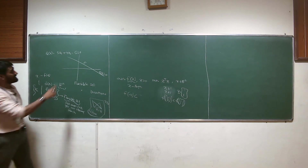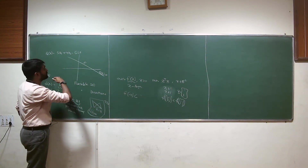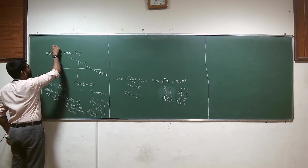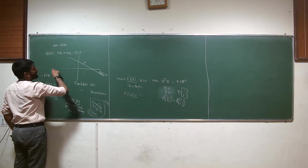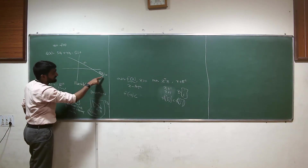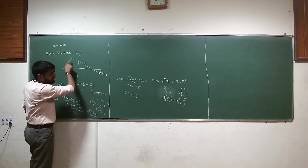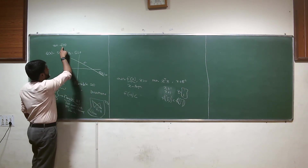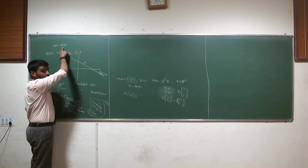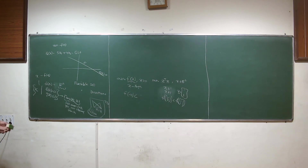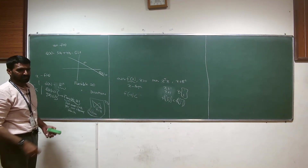That means you cannot search anywhere in R² now. If the goal is to minimize some f of x, you can only move along this line and find out which point along this line f of x has the lowest value. And similarly for the other problem.